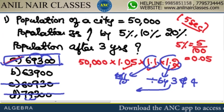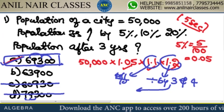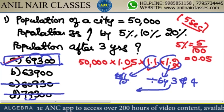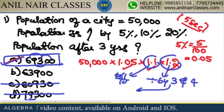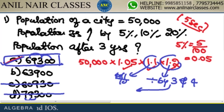Listen carefully. 50,000: first year increased by 5% so it is 1.05, second year 10% so it is 1.1, third year 20% so it is 1.2. Since 1.2 is divisible by 3 and 4, the answer must be divisible by 4. The last two digits should be divisible by 4 — 30 is not divisible by 4, so remove that option.